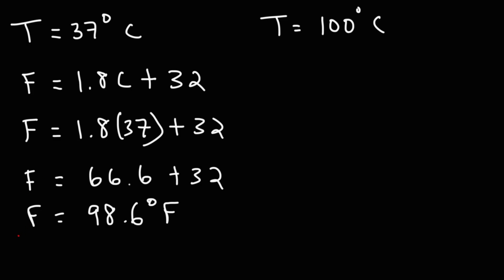This is basically the standard temperature that our body is at. Our body typically operates at a temperature of 98.6 degrees Fahrenheit, or 37 degrees Celsius.